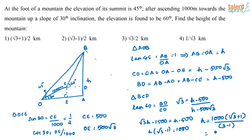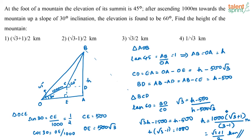Multiplying by the conjugate: h equals 1000(√3 + 1) divided by (3 minus 1), which equals 1000(√3 + 1)/2, or 500(√3 + 1) meters. Since the options are in kilometers, dividing by 1000 gives h equals (√3 + 1)/2 kilometers.